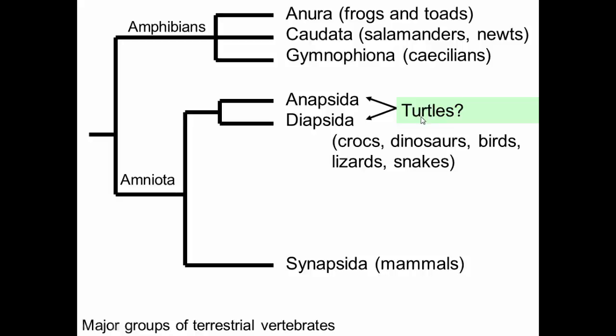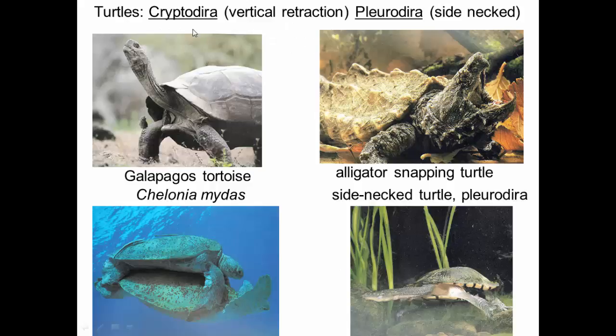First, turtles. It's unclear from the fossil record whether turtles are actually anapsids or diapsids, though it's clear that reptiles are diapsids. There are two major groups of turtles: cryptodira, which pull their necks straight back — probably the ones you're more familiar with — and pleurodira, called side-necked turtles, which don't pull their necks back but flop them along the side of their body and tuck them underneath the edge of the shell.